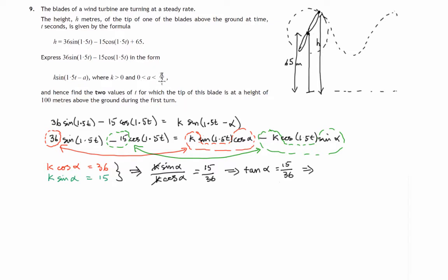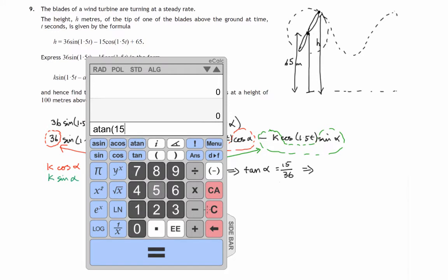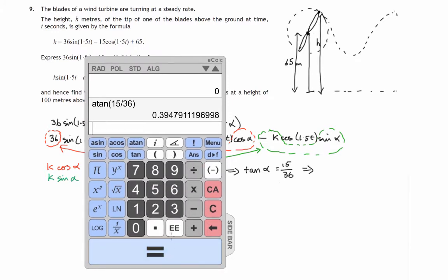We're in radians here. Notice that alpha has to be between 0 and pi upon 2, in the first quadrant. We'll employ our calculator in radian mode to find what angle has a tangent of 15 over 36. Use the inverse tan function. We get this number, so alpha equals 0.394, rounded to 0.3948 to 4 significant figures.